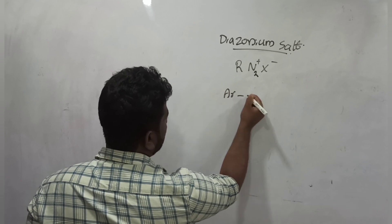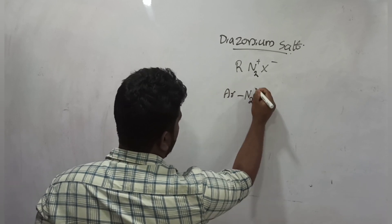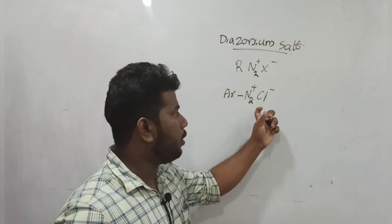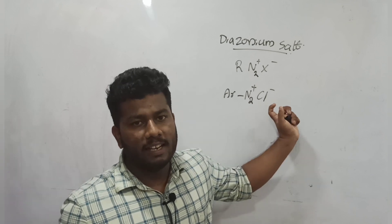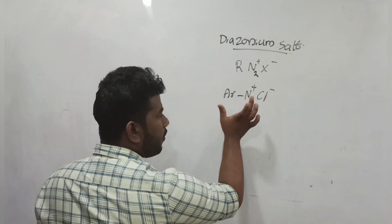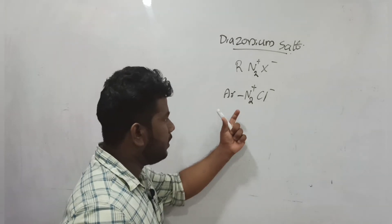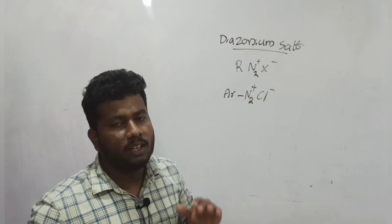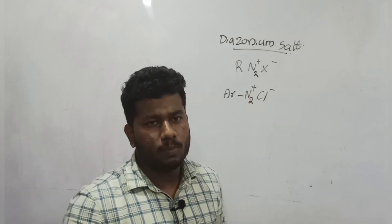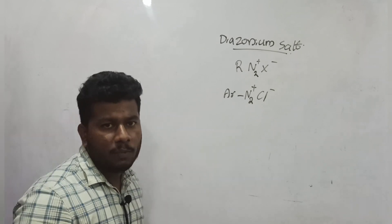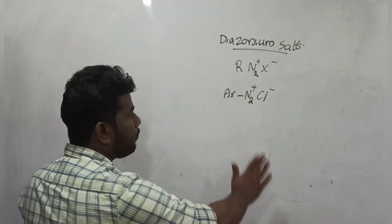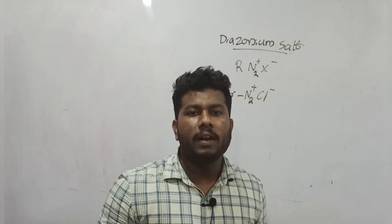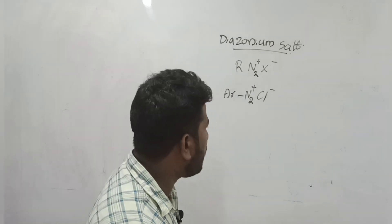We use ArN2+Cl- on the benzene — diazonium chloride. This is a very important reaction, a very important component. This is what we call conversion reactions; we call this diazonium salt. This is called preparation of diazonium salt.